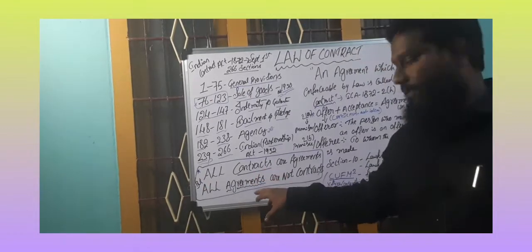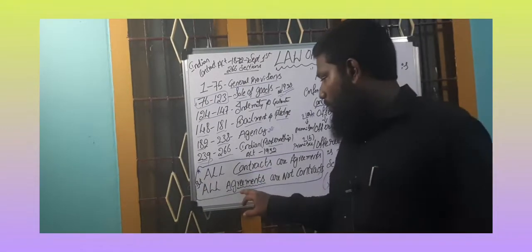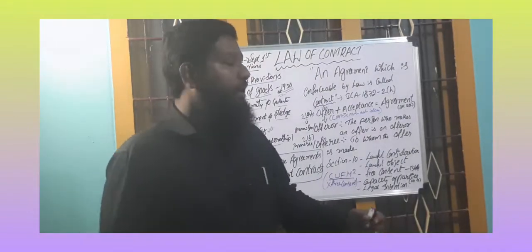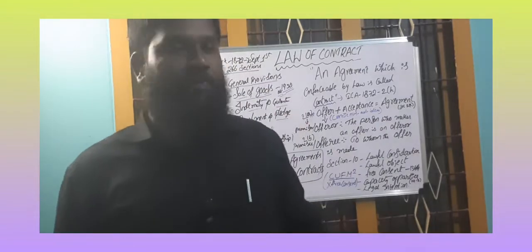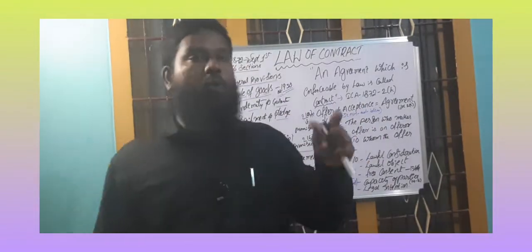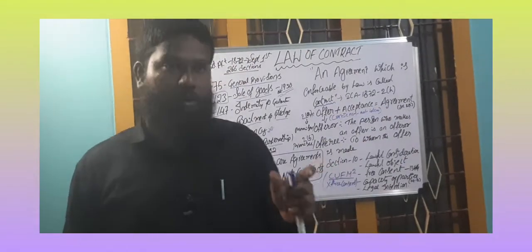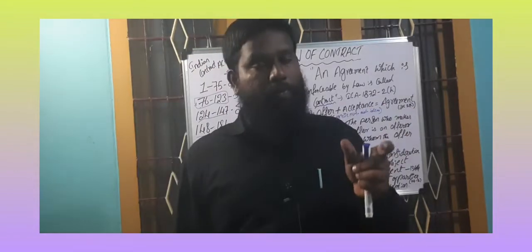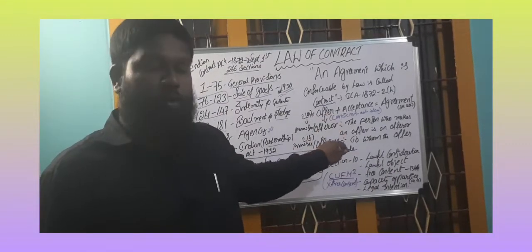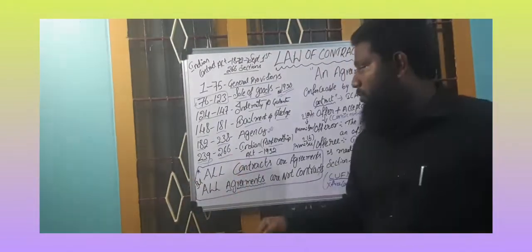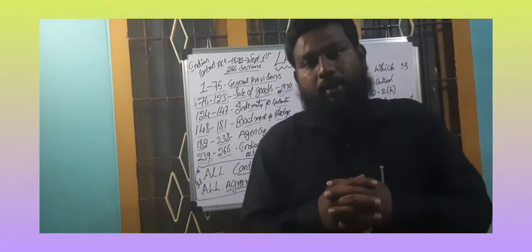An agreement is defined under Section 2(e) of the Indian Contract Act 1872. The formula is: offer plus acceptance equals an agreement. A person who makes an offer is called the offerer or promisor, and the person who accepts the offer is called the offeree or promisee. Sections 2(a) and 2(b) provide detailed interpretations of offerer and offeree.